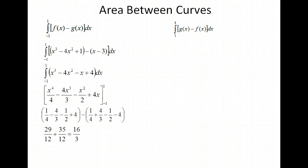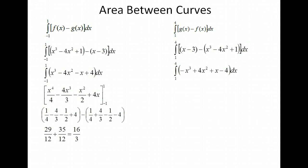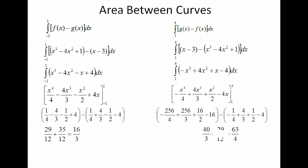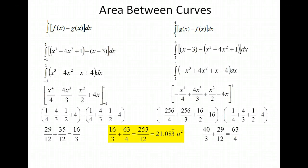Now let's do our second interval. We're going to do our g of x function first, minus our f of x function, and then simplify. You should notice that we got exactly the same thing but with opposite signs — that's what's going to keep us from getting a negative on this interval. Then again integrate, plug in our endpoints of integration using 1 and 4, and simplify our fraction. So we have 16 thirds for the first interval and 63 over 4 for the second. Then just add them together, and we get around 21 units squared for our area.